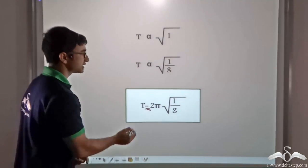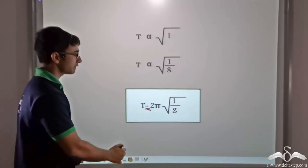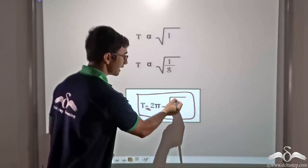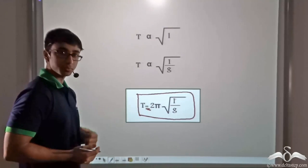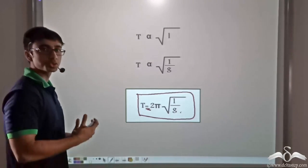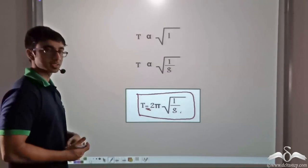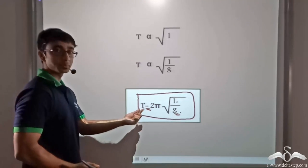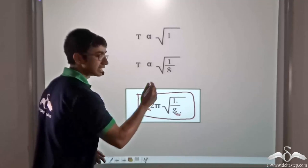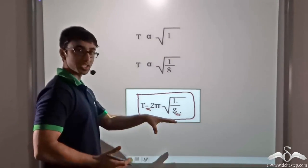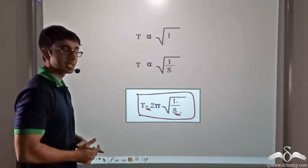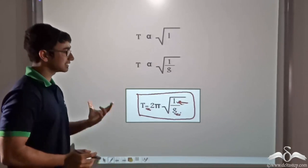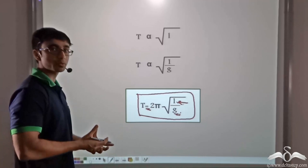If we introduce an equality sign in place of the proportionality, we find that time period is equal to 2 into pi into root over L by g, where L is the length of the pendulum and g is the acceleration due to gravity. If we go above the earth at a certain point where g changes, then for a given length time period would be decided by the acceleration due to gravity. Whereas if we are on the surface of the earth and we consider different lengths of the string of the pendulum, then the time period would be defined by the length of the pendulum. This is how it was possible to regulate time with the help of a pendulum.